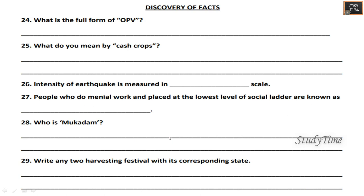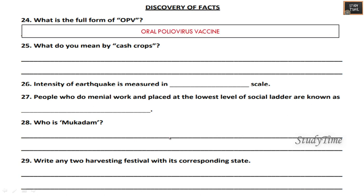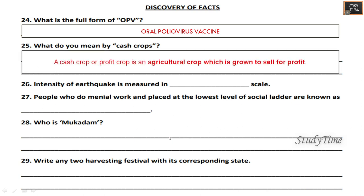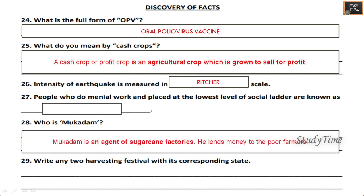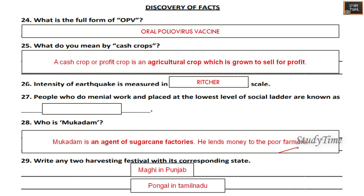Discover Your Facts section. What is the full form of OPV? It is Oral Polio Virus vaccine. What do you mean by cash crops? A cash crop or profit crop is an agricultural crop grown to sell for profit. The intensity of an earthquake is measured on the Richter scale. People who do menial work and are placed at the lowest level of the social ladder are known as menial workers. Mukadam is an agent of a sugar cane factory who lends money to poor farmers. Write any two harvesting festivals with their corresponding states: Maghi in Punjab, Pongal in Tamil Nadu.